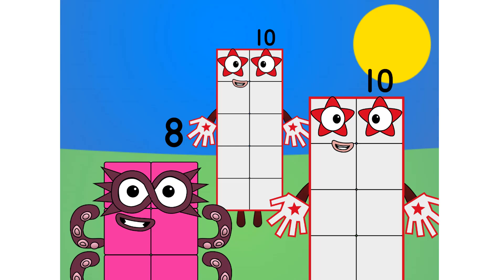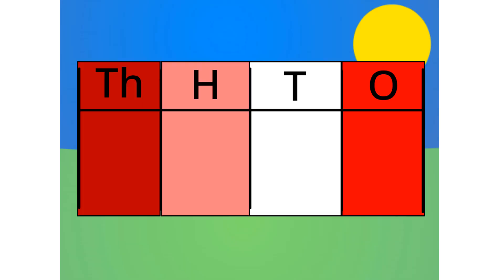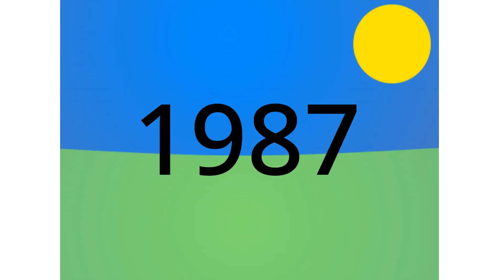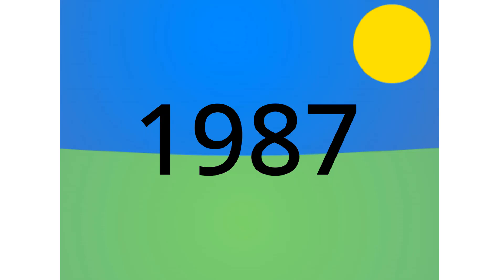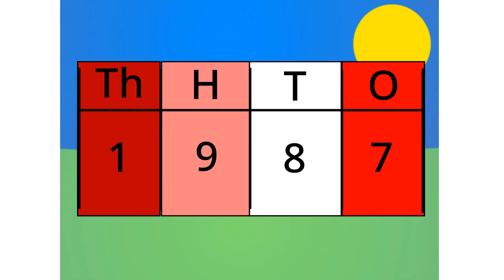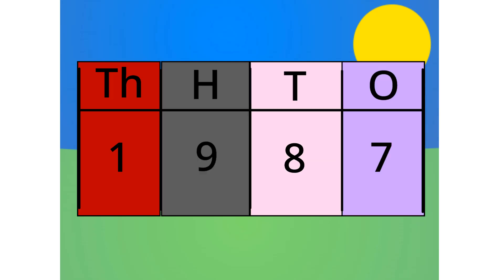Let me show you all why we count in base 10 in a few different ways. First off, the number table. Let's do 1,987 for example. Do you see anything that relates to this number? Alright, let's split it into its units. This number is made up of 1,000, 9 hundreds, 8 tens, and 7 ones.